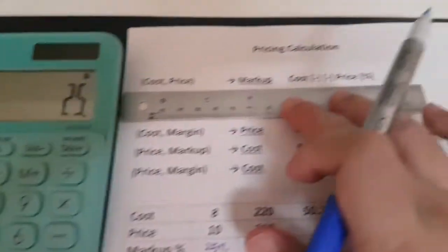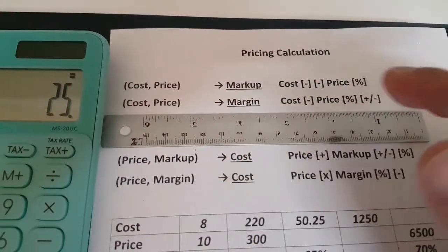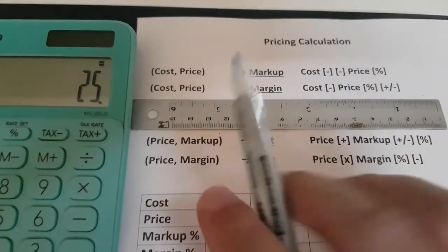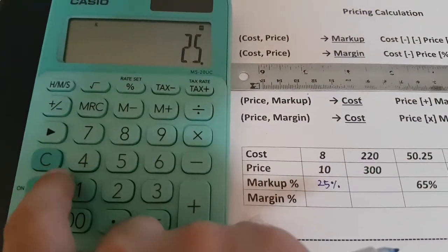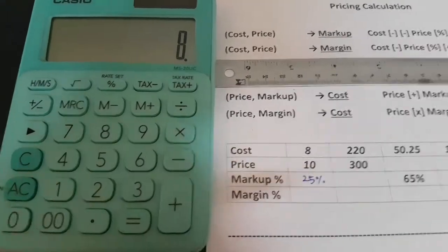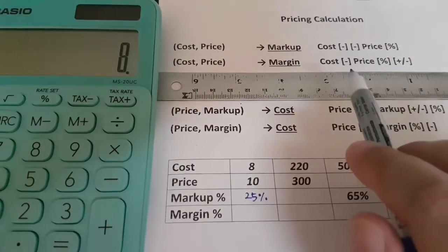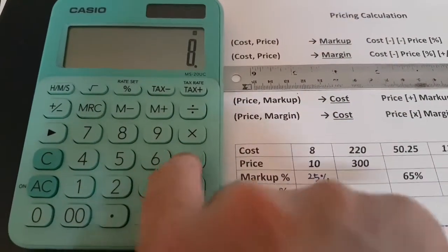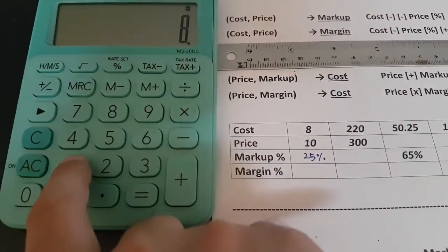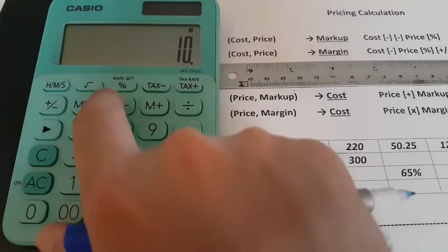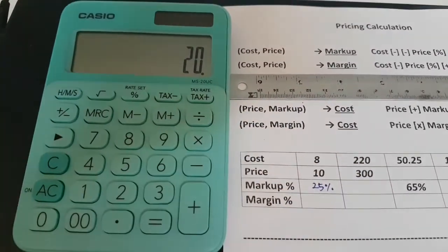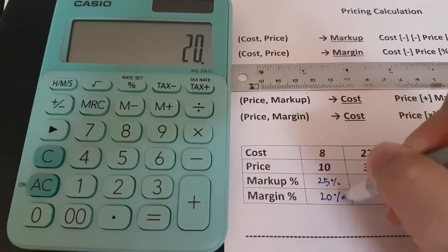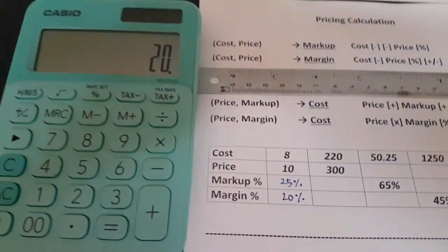The second one — now you want to find the margin. Let's go ahead and try the second step. This is how you calculate the margin when you know cost and price. Clear the last problem, press 8, then minus price, percent, minus price, and then percent. That's going to be 20 percent.